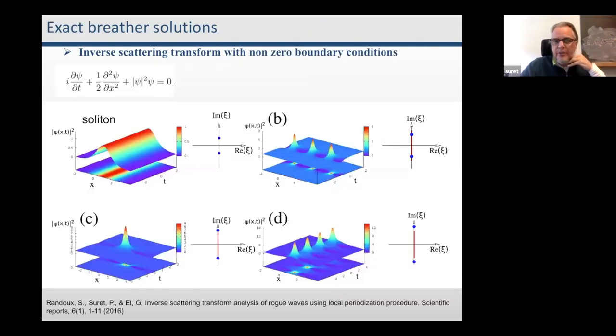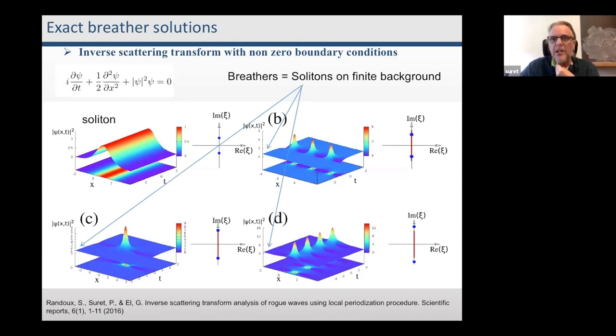This is for zero boundary condition. Now if we look at non-zero boundary condition, you have breather solutions that are often seen as solitons on finite background. The inverse scattering transform representation is different - you still have these discrete points that correspond to one soliton, and what is called a branch cut, which is in red here, that corresponds to the plane wave. That is the reason why Peregrine soliton is often seen as the interplay between a soliton and a plane wave.